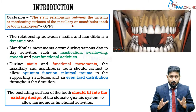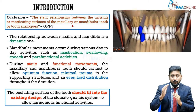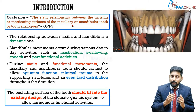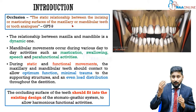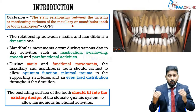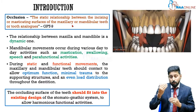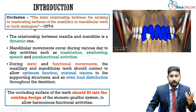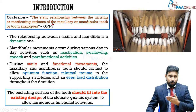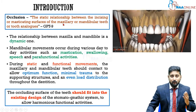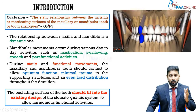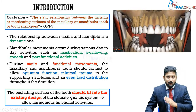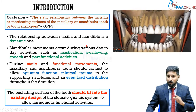This relationship can be between upper and lower natural teeth, between natural and artificial teeth, or between two artificial teeth — tooth analogs — and it is still called occlusion.